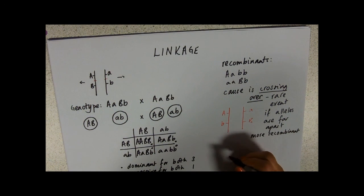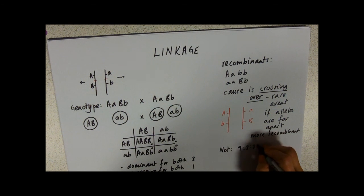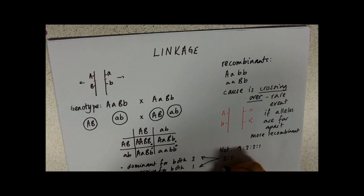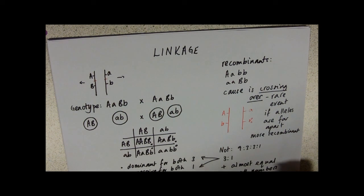Crossing over is a big cause of recombination. What you'll tend to find, and how will you spot this in an exam? What to look for is that you are getting not a 9:3:3:1 ratio, and you are getting a 3:1 ratio of the dominant to recessive, plus almost equal small numbers of these recombinants.